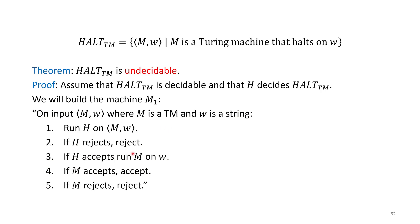Our machine is going to decide ATM, so it has the same input structure as ATM — an M and W — which is also the same input structure for our machine H. The reason we couldn't decide ATM before is because we couldn't tell if a machine was going to halt or not. But now we have machine H that can tell us when a machine will halt. So let's run H on M and W.